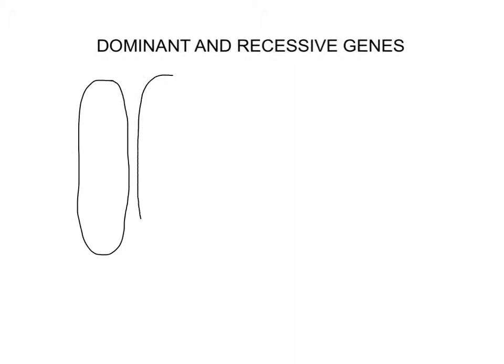In every body cell — and by body cell I mean essentially not sperm and egg — if we just take a skin cell for example, in the nucleus of that cell there would be 46 chromosomes. Chromosomes are just long molecules of DNA. So there are 46 pairs. We're just going to draw a random pair here — let's say pair 7, just for the sake of argument.